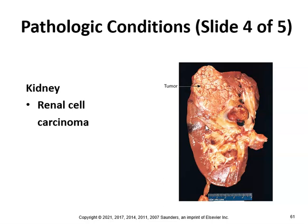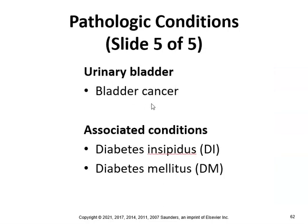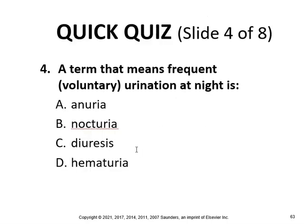Bladder cancer is another urinary condition. Diabetes insipidus occurs when the anti-diuretic hormone is not secreted adequately, or the kidney is resistant to its effect. Diabetes mellitus occurs when insulin is not secreted adequately or not used properly. Nocturia — frequent voluntary urination at night — is associated with these conditions.